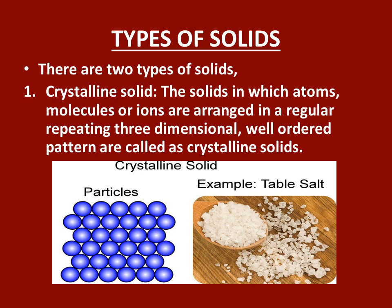There are two types of solids. The first one is crystalline solids. Crystalline solids are the solids in which atoms, molecules, or ions are arranged in a regular, repeating, three-dimensional, well-ordered pattern. For example, table salt, that is NaCl, exists in a three-dimensional cubic structure.